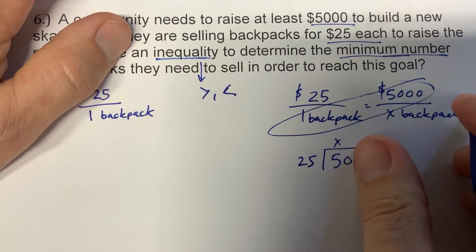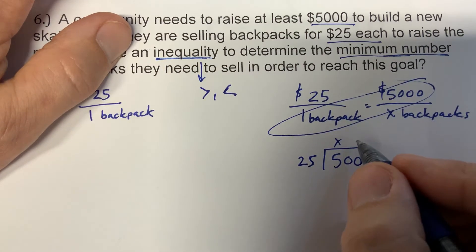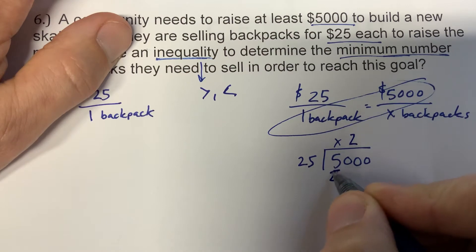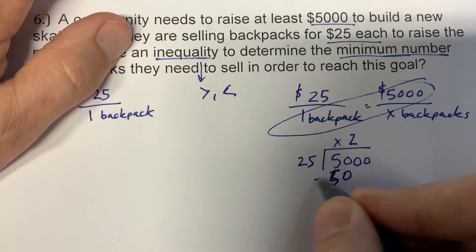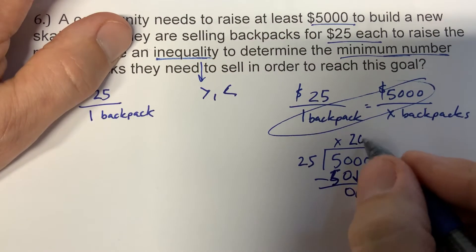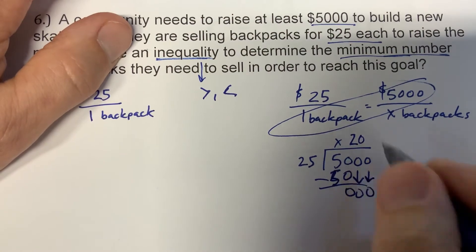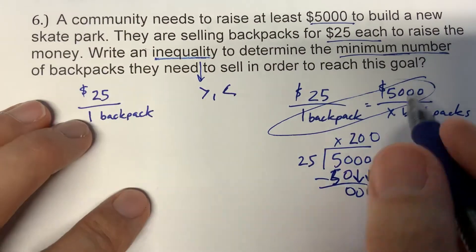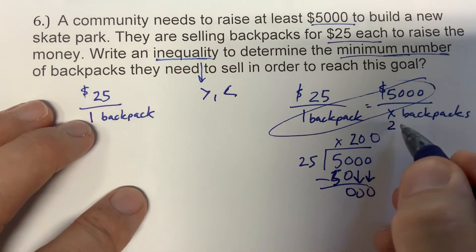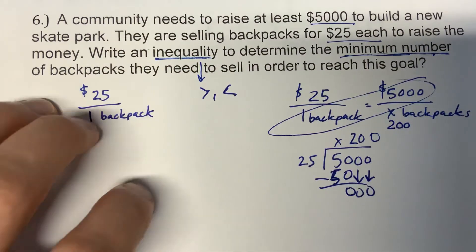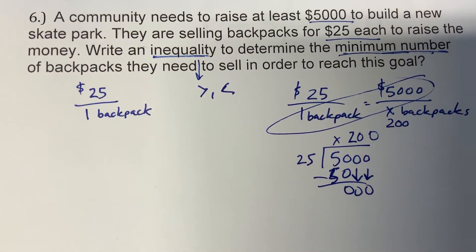25 doesn't go into 5, but goes into 50 twice. Don't forget the zeros — 25 goes into 0, 25 goes into 0 — and we get 200. So we need to sell at least a minimum of 200 backpacks.